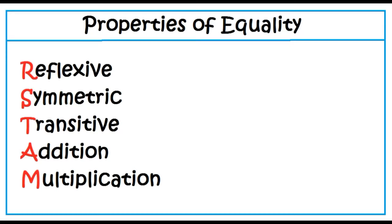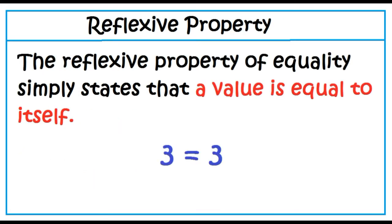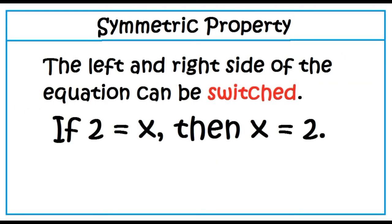Properties of equality. The reflexive property of equality simply states that a value is equal to itself. The symmetric property of equality simply means that the left and right side of the equation can be switched. If 2 equals x, then x equals 2.